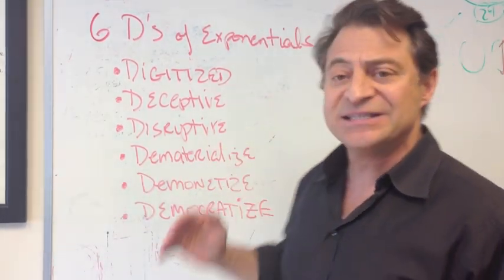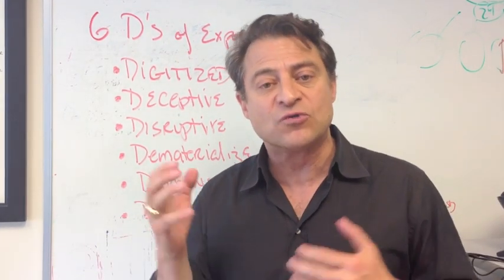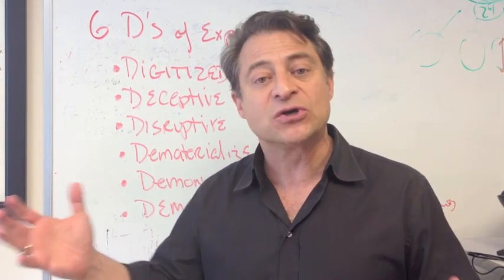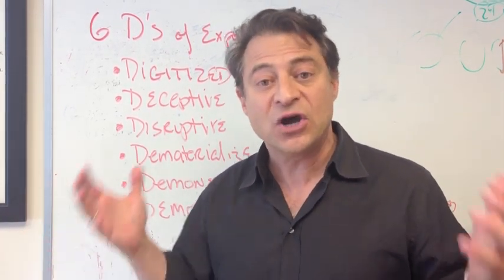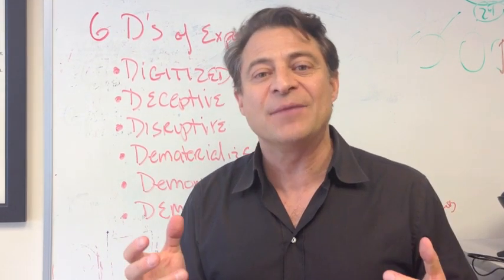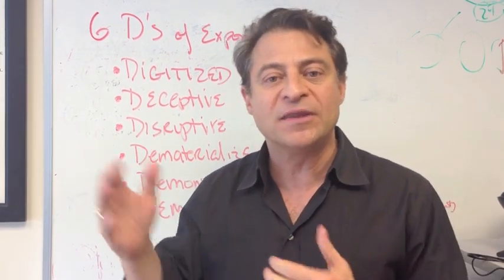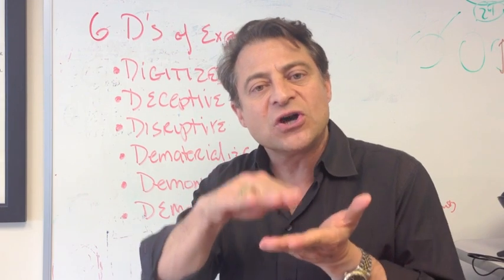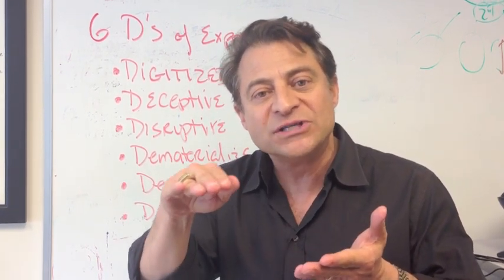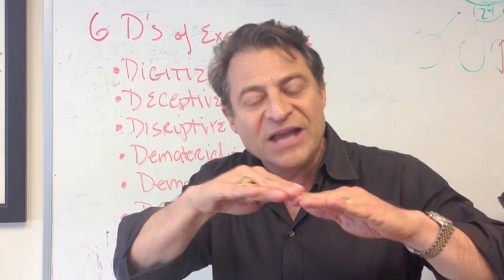The second D is that it's deceptive. When something is growing exponentially, it's deceptive in its growth. That's how Kodak went out of business — the digital camera deceptively snuck up on them. Because as you start to multiply and double very small numbers — .01, .02, .04, and so forth — it looks like a flat line until it hits the knee of the curve and explodes on you.